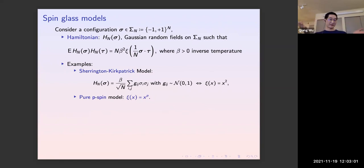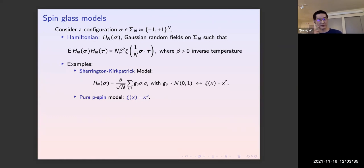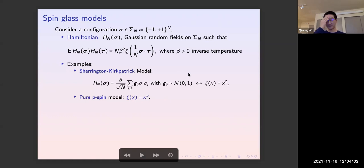Here are some definitions of the spin glass models. We consider the configuration space from the n-dimensional hypercube, where each spin takes plus or minus one values — different from the previous talk, which used the n-dimensional sphere. We consider a Hamiltonian which is a Gaussian random field defined on this n-dimensional hypercube. The covariance of this Gaussian random field is given a nice form via the so-called structure function, which is used to define different spin glass models. Beta is the standard inverse temperature.